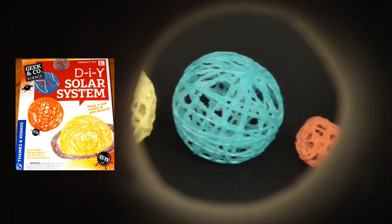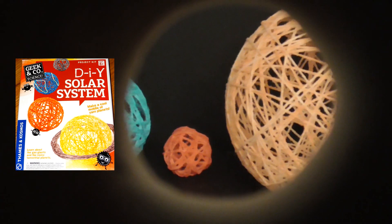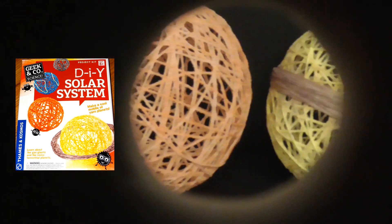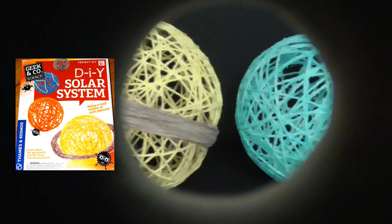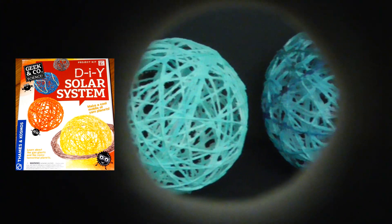We bought this do-it-yourself solar system kit that uses yarn, different size balloons, paint, and glue to create the planets.